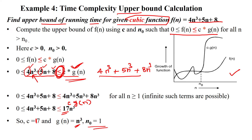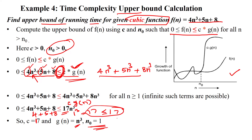We substitute the first positive value n₀ = 1: 4·1 + 5·1 + 8 = 17, and 17·1³ = 17, so 17 ≤ 17 is satisfied. From n₀ = 1 onwards, f(n) ≤ c·g(n) holds. Substituting n = 2: 4·8 + 5·2 + 8 = 32 + 10 + 8 = 50, and 17·8 = 136, so 50 ≤ 136 is also satisfied. Therefore, for this cubic function, c = 17 and g(n) = n³.